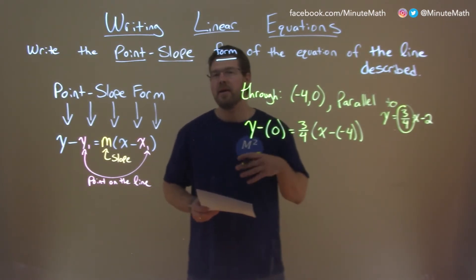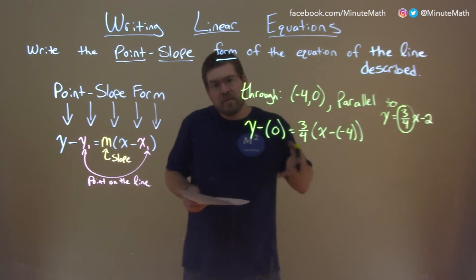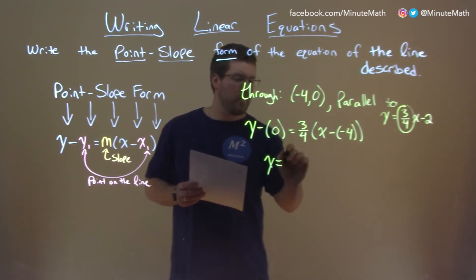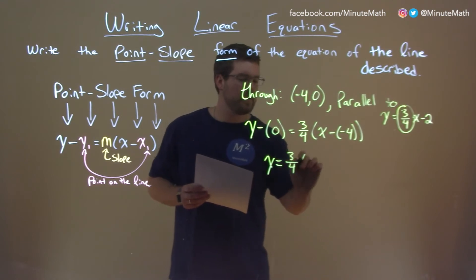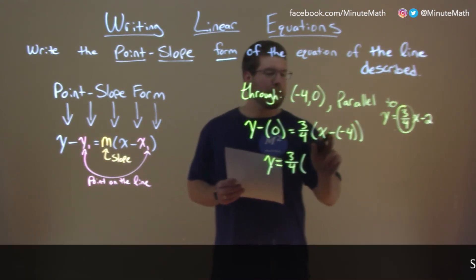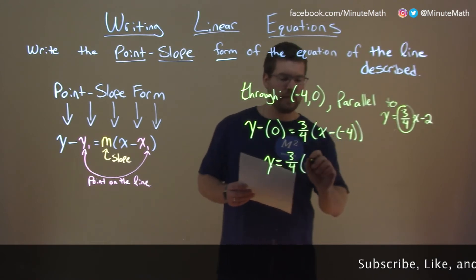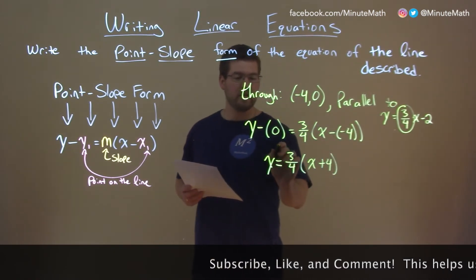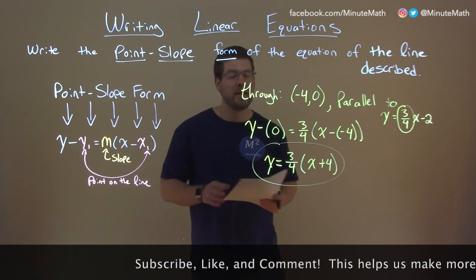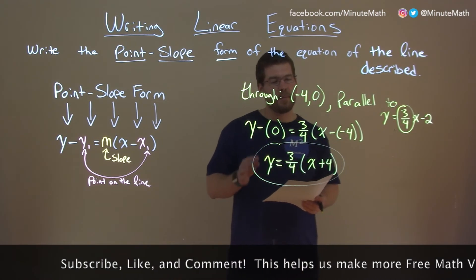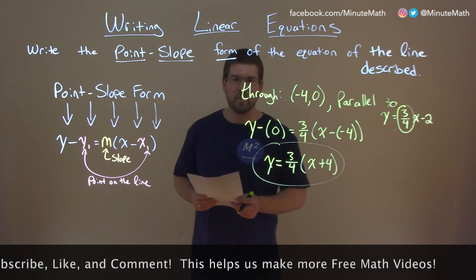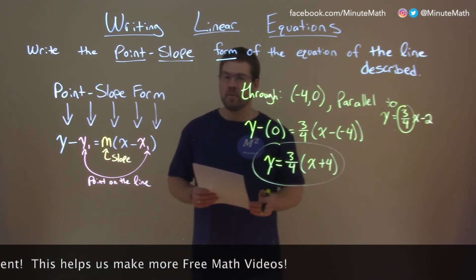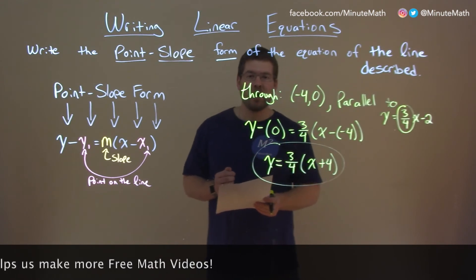y minus 0 — no one ever really writes that. Minus 0 doesn't do anything, so we just have y. 3 fourths comes down, so does our equal sign, and minus a negative 4 is the same thing as adding 4. So we have x plus 4 here, and now we have our answer in point-slope form. Be careful — it almost looks like it's slope-intercept, but it's not. It's still in point-slope form: y equals 3 fourths times x plus 4. And there we have our answer.